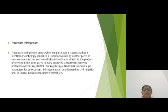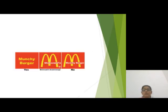Next is trademark infringement. Trademark infringement occurs when one party uses a trademark that is identical or confusingly similar to a trademark owned by another party — meaning the original trademark is slightly changed and used. Here is an example: Munshi Burger tried to copy the trademark of McDonald's and made a confusingly similar version.